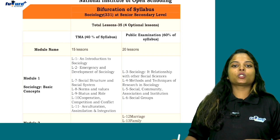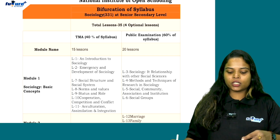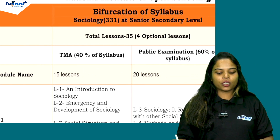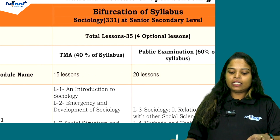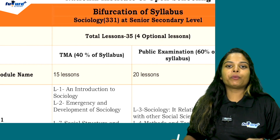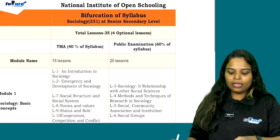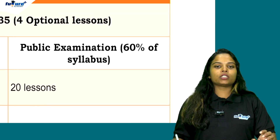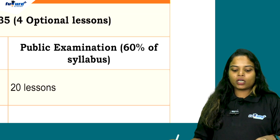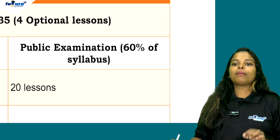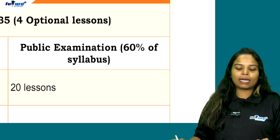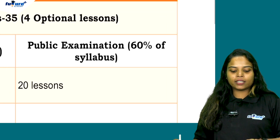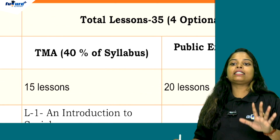Let's go to the next subject. The next subject is Sociology. You will learn the code of sociology. We will learn about 40 chapters in total — 20 chapters for public examination and 20 chapters for assignments.